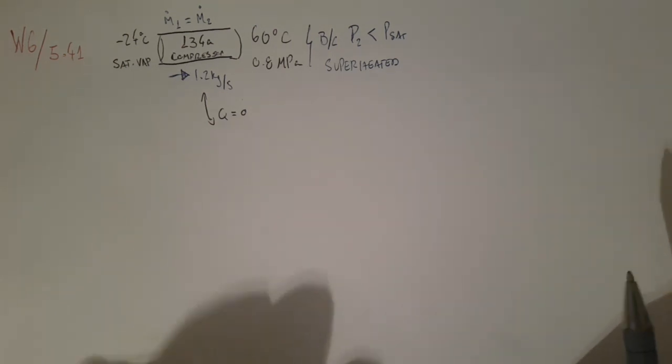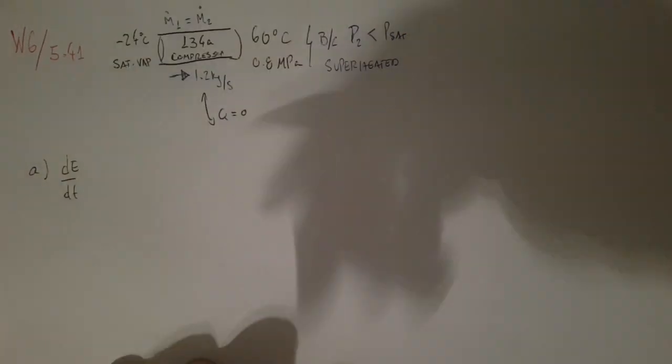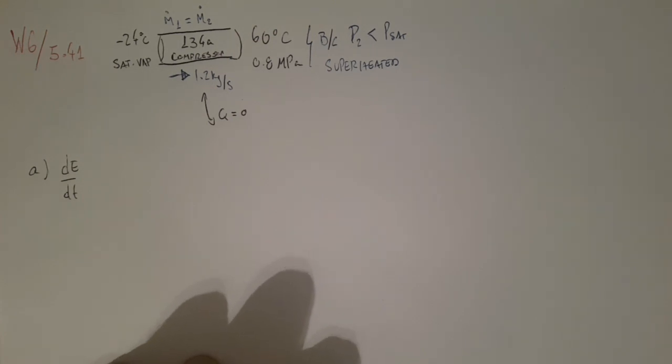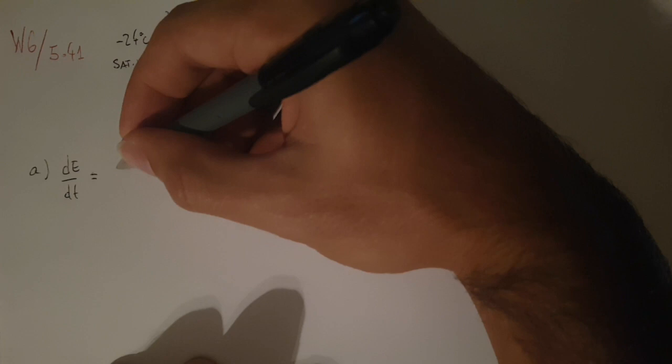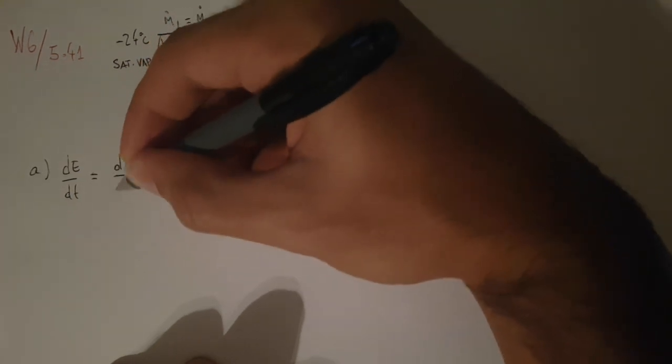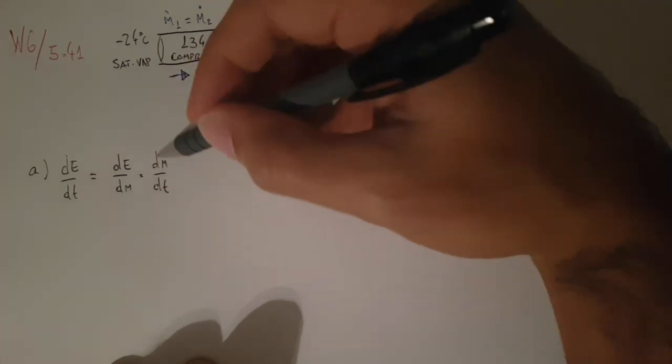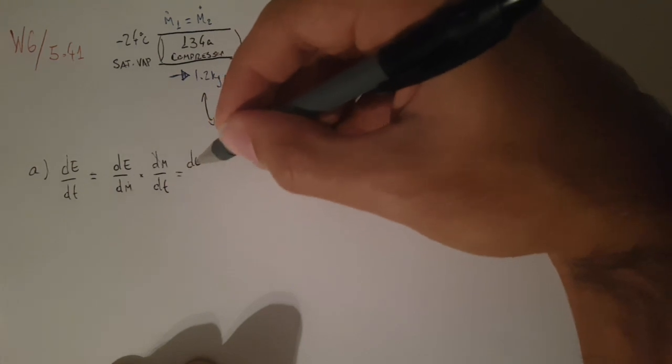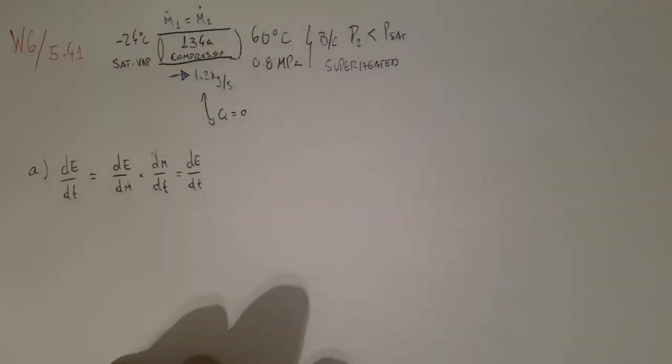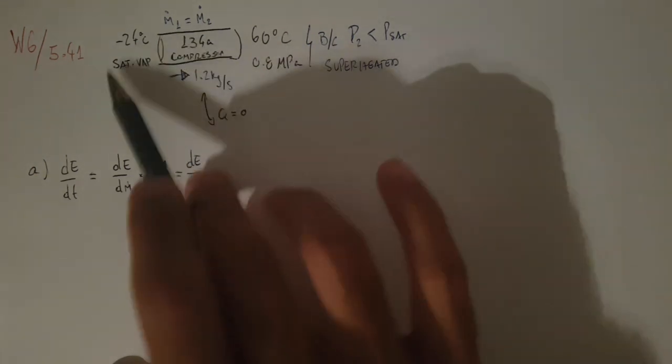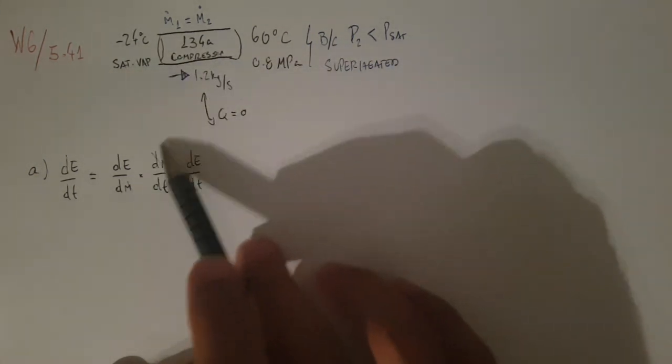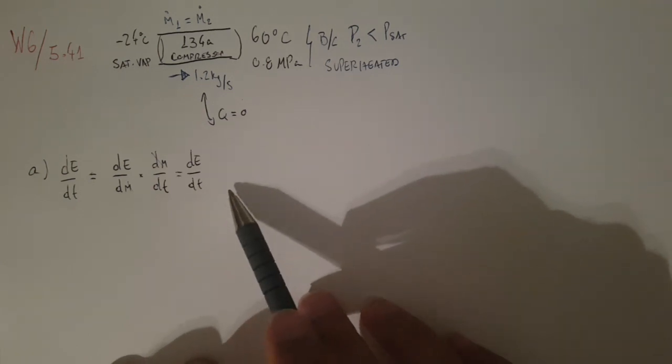For part A, we want the power. Power is how energy changes with time, the rate of change. If we have the rate of energy per mass and multiply by the rate of mass per time, the masses cancel and we're left with the rate of energy change with respect to time. If we can find the change in energy from inlet to outlet with these two states and multiply by the mass flow rate, we can get the power.